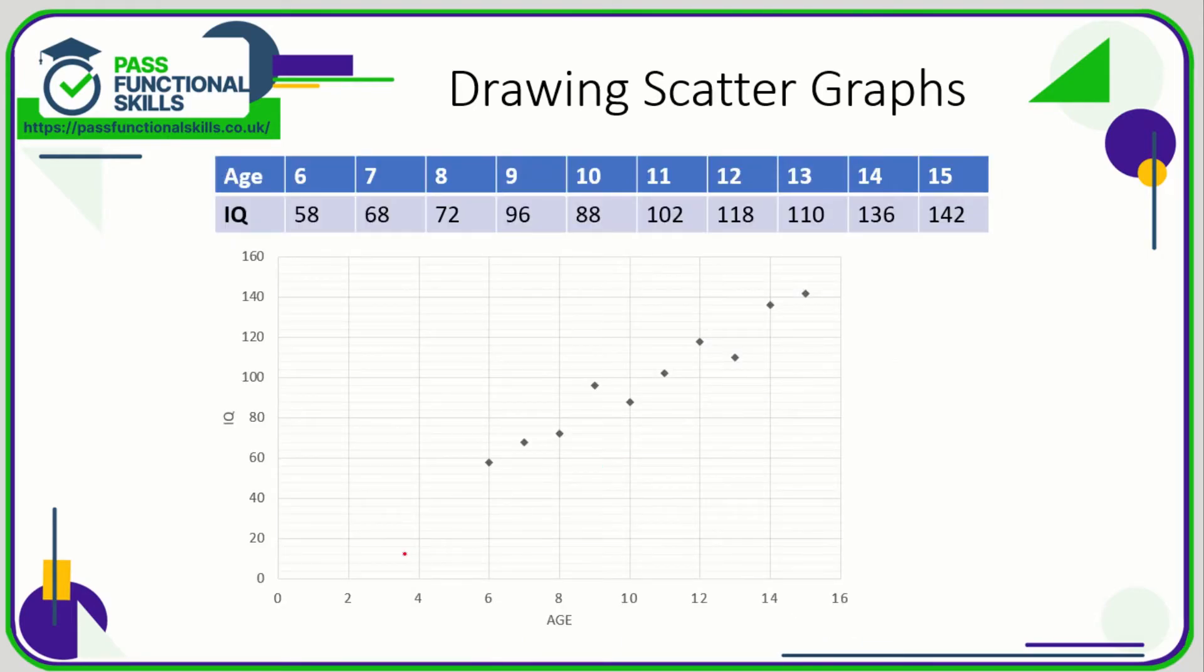So this is what I've done. I've done my age going across in groups of two, so if I want a seven-year-old, that's halfway between six and eight. I've done my IQ going up in blocks of 20. What I don't like about this particular graph though is all this blank space here.